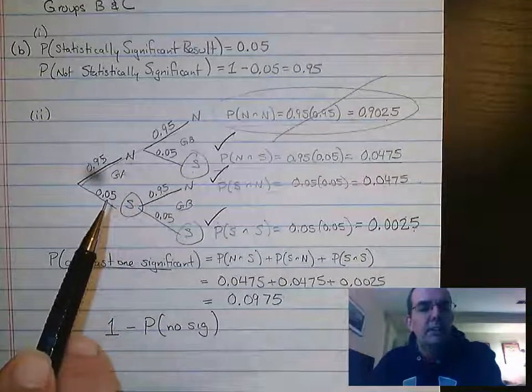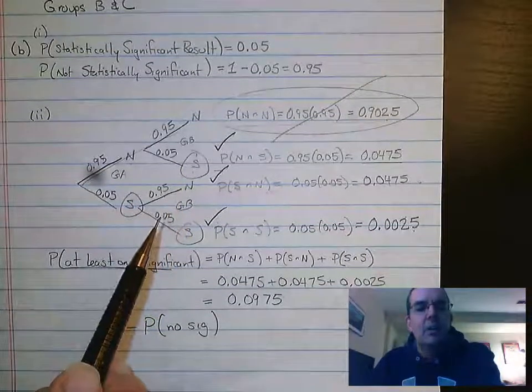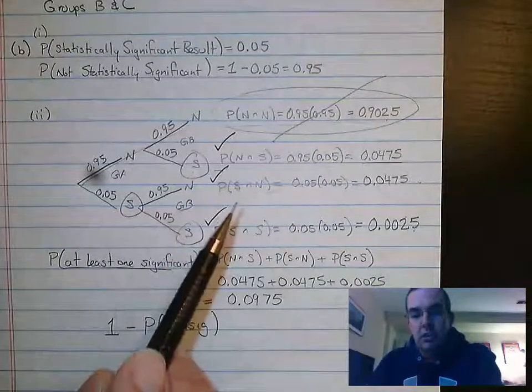Or the first test was significant and the second test was not. And the first one is significant and the second one is significant. It's a tree diagram.